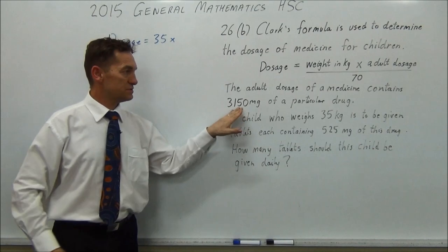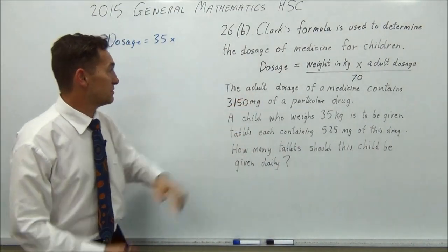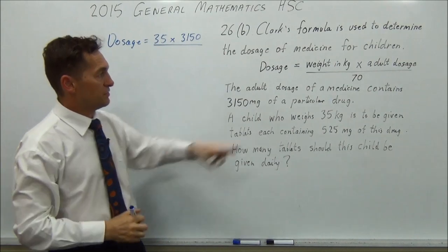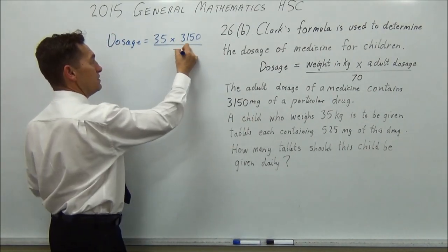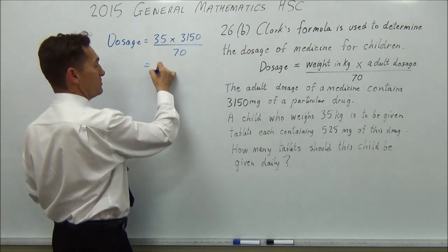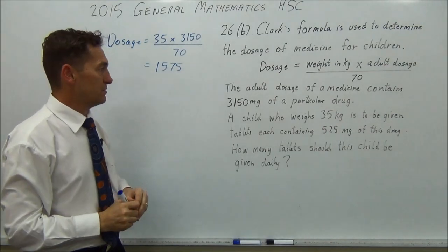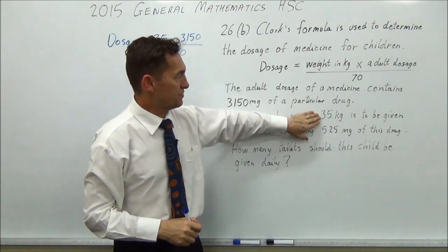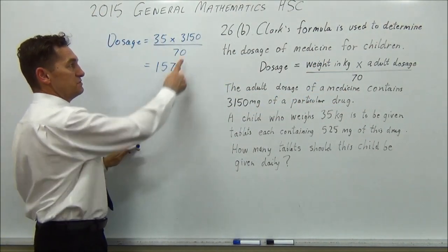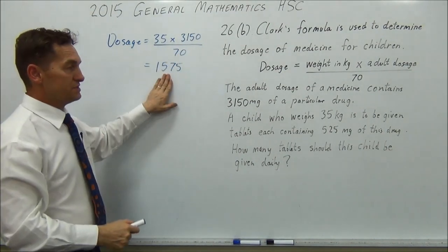So what is the adult dosage, which is here? Yeah, the adult dosage is 3150. You're going to divide it by 70, press that on your calculator, and you get 1575. If you're sharp and you're pretty alert, you should realise that you've got 35 on 70. Well, 35 on 70 is a half. So really you're just halving that. If you're not alert, punch it in your calculator, and you get this number.